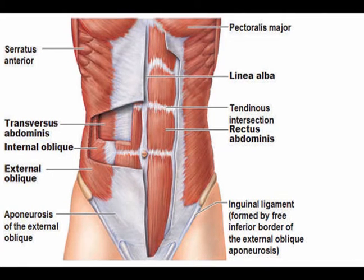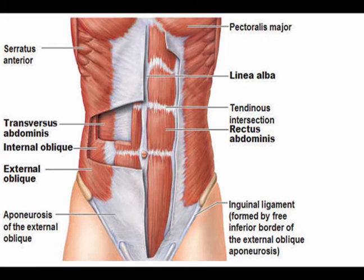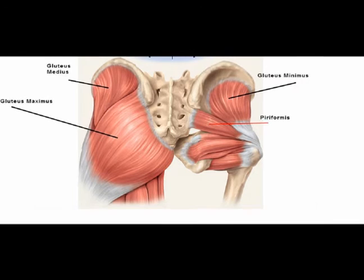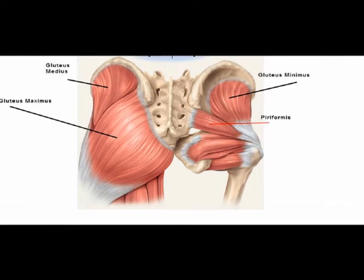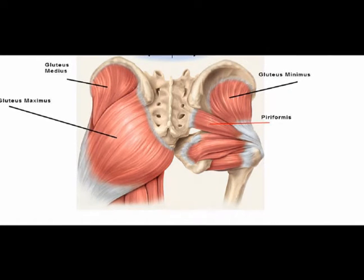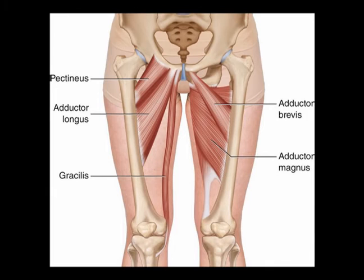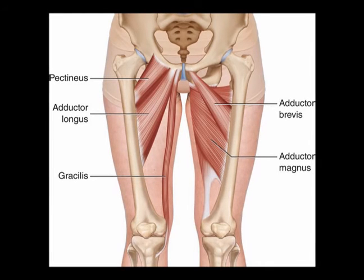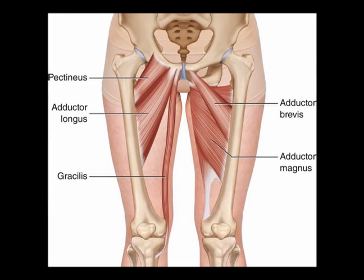The core muscles also include the multifidi, the diaphragm, the pelvic floor muscles, the gluteus maximus, the gluteus medius, and the gluteus minimus. And in some literature, you may even see the hip adductors classified as core muscles.